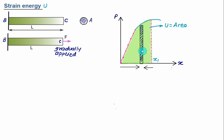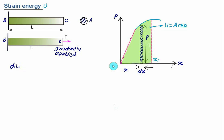Consider the work done dU by load P as the rod elongates by a small amount dx. Originally it is elongated by x and is further elongated by dx. For this small rectangle, the load acting is equal to P, so we can calculate the elemental area. By integrating this elementary work from 0 to x₁, we can calculate the total work done, which equals the strain energy U.